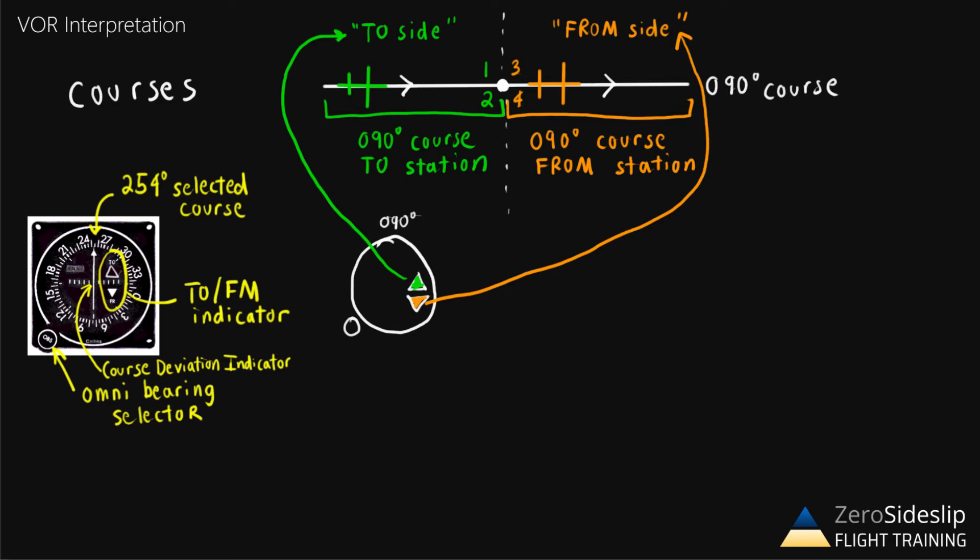We're going to draw another VOR indicator here with the 090 course we've been using. And this time we are going to have the needle deflected to the left. So this is really important. The way I want you to interpret this: if we were to look at what numbers would be on the left side of the instrument, we would have 90 minus 90 or zero degrees equivalent to 360 degrees, which is due north. And on the right side of the instrument, it would be showing due south or 180 degrees. So the way to interpret this now is if the needle is on the left side of the instrument, we say that the selected course is to our north.